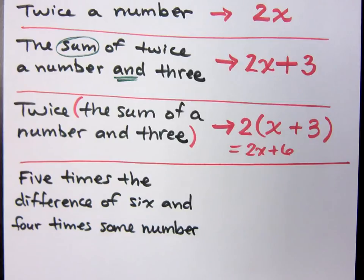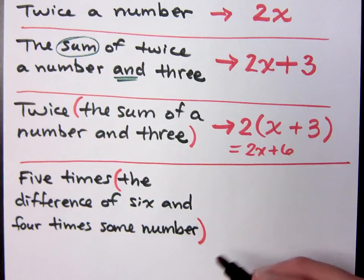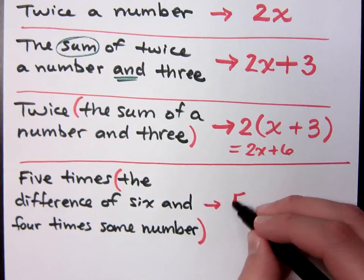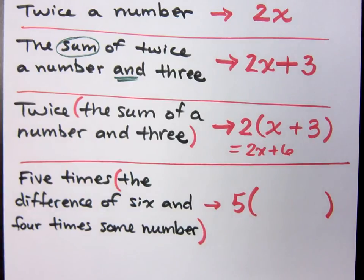Five times. I'm doing five times what? Five times a number or five times a group? Group. Group. What tells you it's a group? The difference. So it's five times the difference of this stuff. So that's going to give me five times a group. And how would you describe what's in the group?